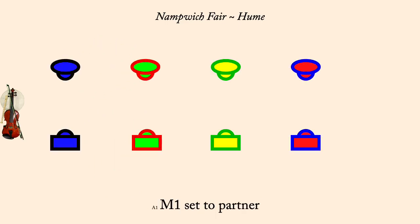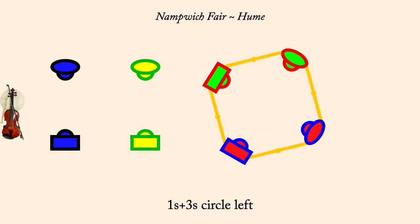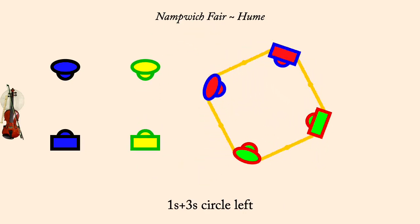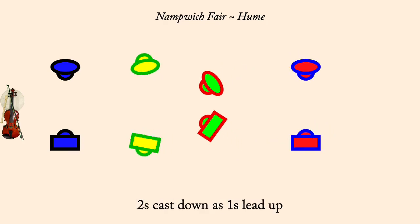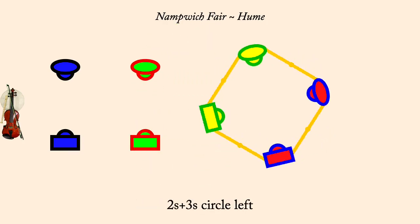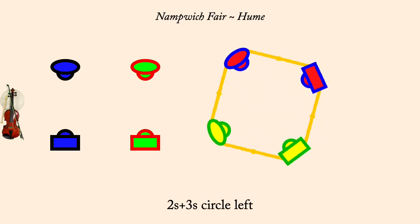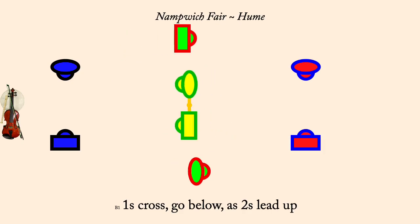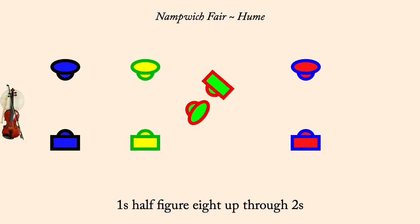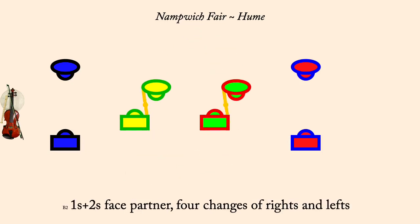Man one set. Ones cast down as twos lead up. Ones and threes circle left. Man two set. Twos cast down as ones lead up. Twos and threes circle left. Ones cross, go below, as twos lead up. Ones half figure eight up through twos. Ones and twos four changes of rights and lefts.